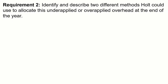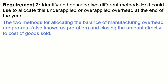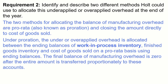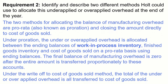Under proration, the underapplied or overapplied overhead is allocated between the ending balances of work in process inventory, finished goods, and cost of goods sold on a pro rata basis using ending balances. The final balance of manufacturing overhead is zero after the entire amount is transferred proportionately. Under the write-off to cost of goods sold method, the total underapplied or overapplied overhead is all transferred to cost of goods sold.